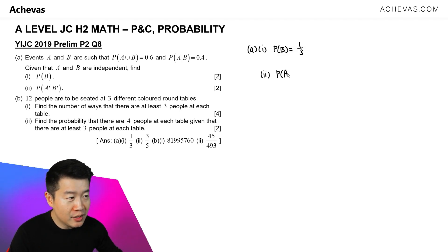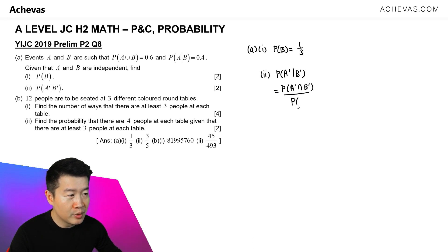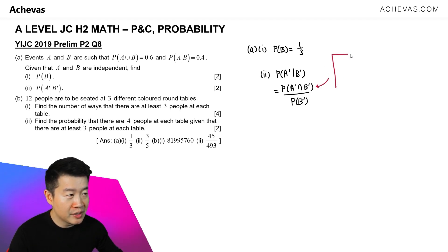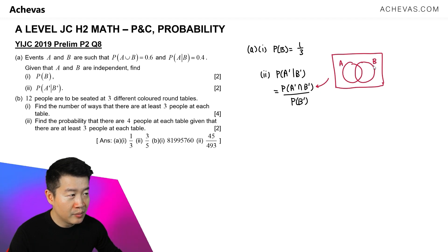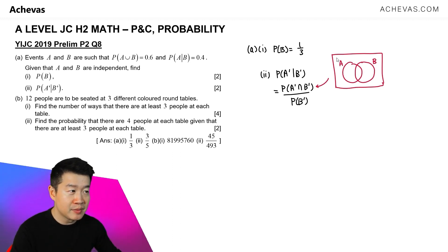In part 2, we are supposed to calculate the probability of A prime given B prime. Using the formula, this is probability of A prime intersect B prime divided by the probability of B prime. Looking at the numerator from the perspective of a Venn diagram, we draw a circle for probability of A and another overlapping circle for probability of B. The probability of A prime intersect B prime is the region that is outside A and outside B at the same time.